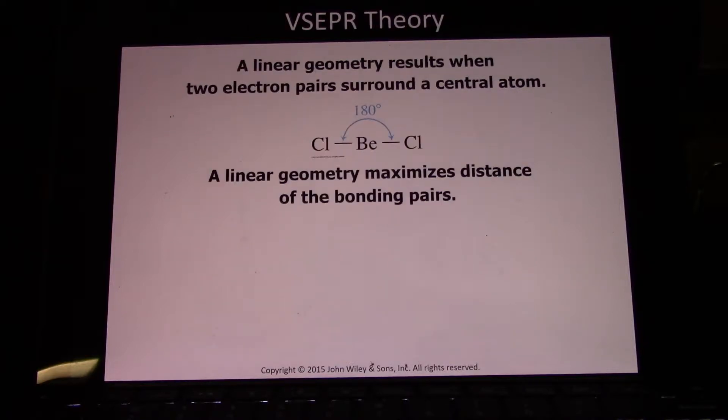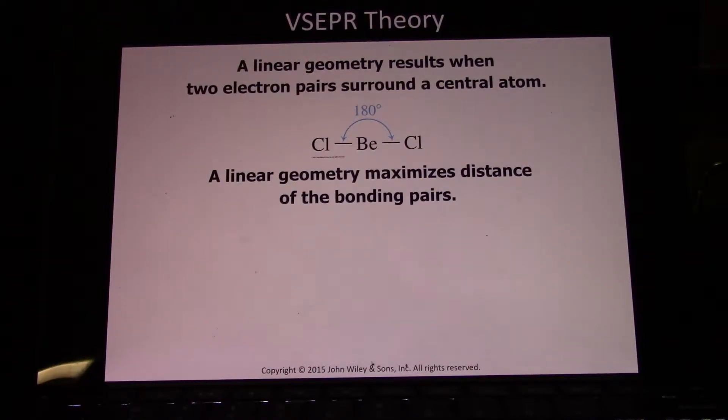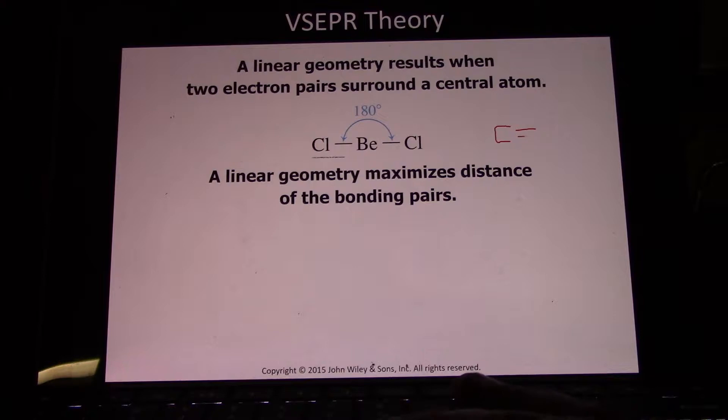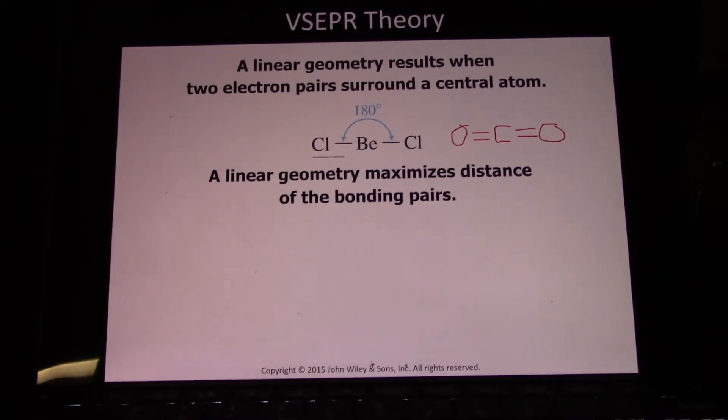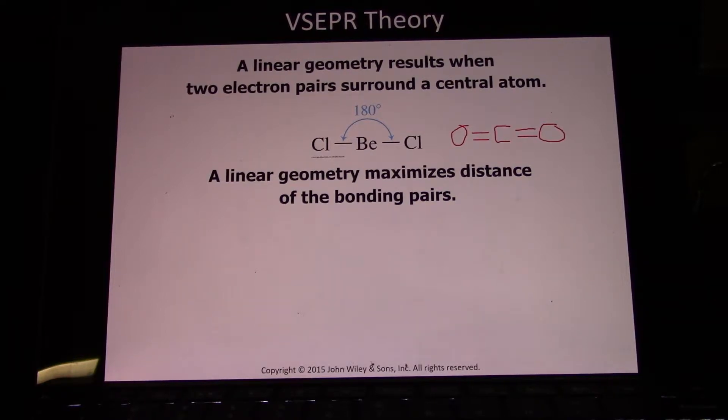If you only have two items coming off the central atom, the farthest they can get apart is 180 degrees. Beryllium is kind of an unusual metal in that it has some covalent properties, so you can form beryllium chloride. A more common example is carbon dioxide. Each double bond just counts as one electron unit because they're together, so a single bond, a double bond, a triple bond, or a lone pair of electrons all just count as one electron unit. Carbon dioxide is linear—the farthest away two electronic groups can get from each other is 180 degrees.